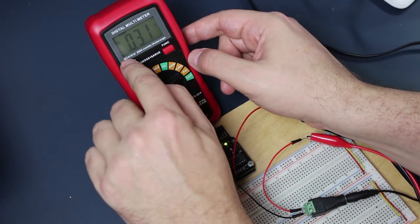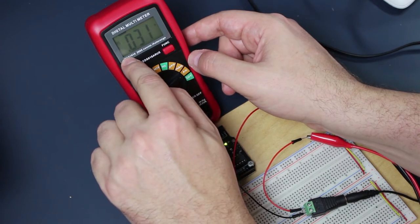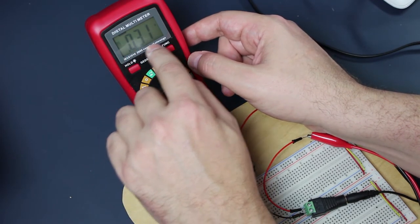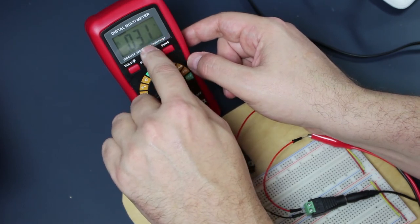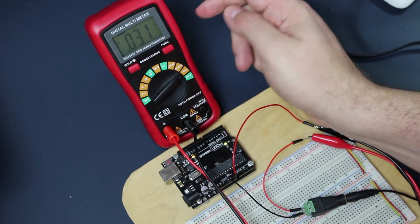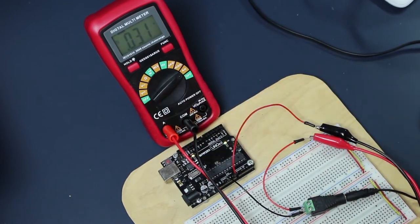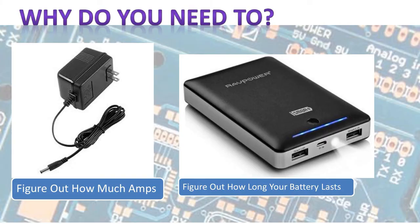You see how much current this project is drawing. Just to give you an idea, before the decimal point, it is one amp. This is one milliamp. So in total, it's 32 milliamps of current that this project is drawing. Now you know how to measure the current draw of your project.